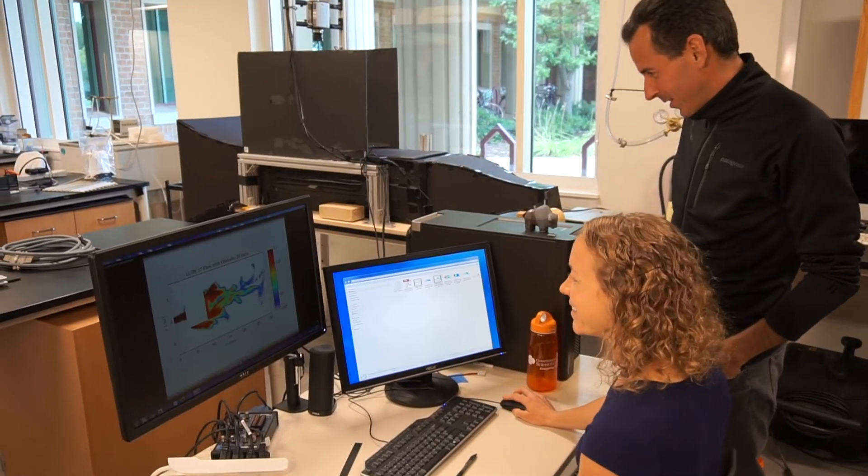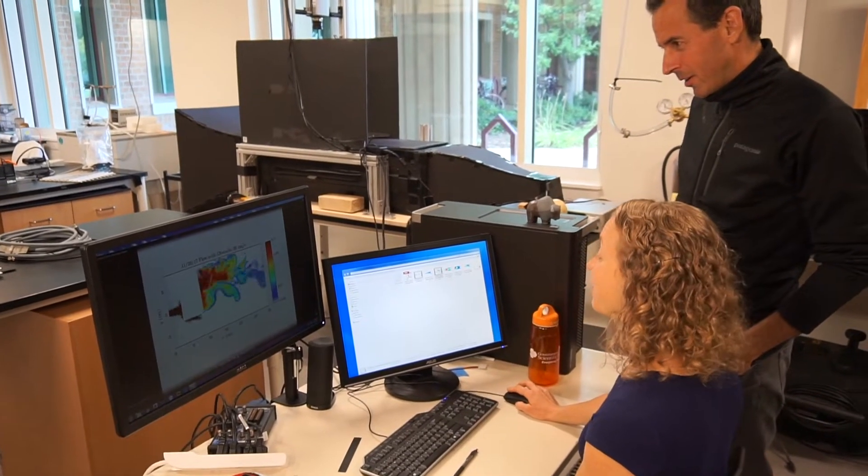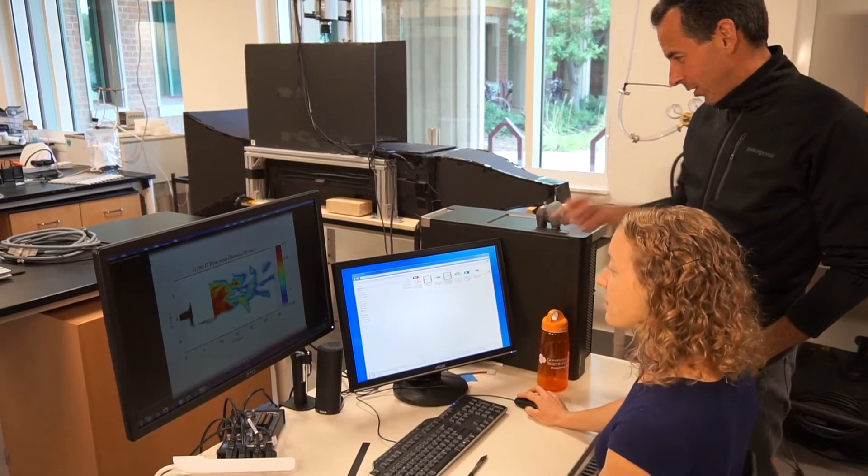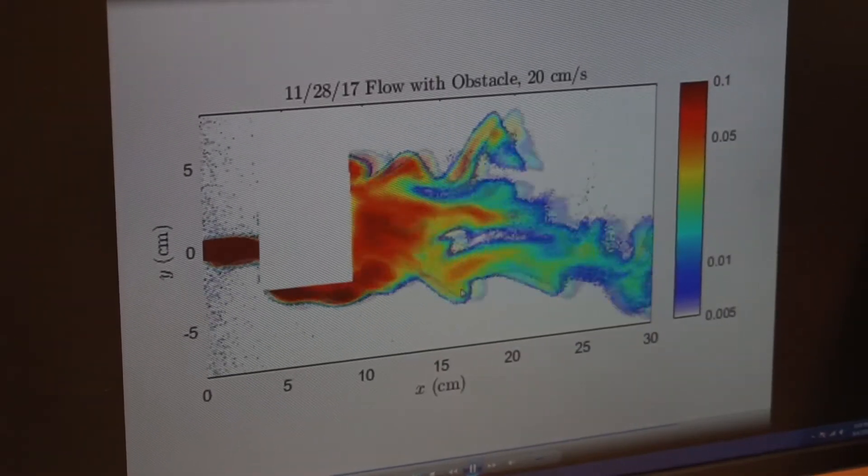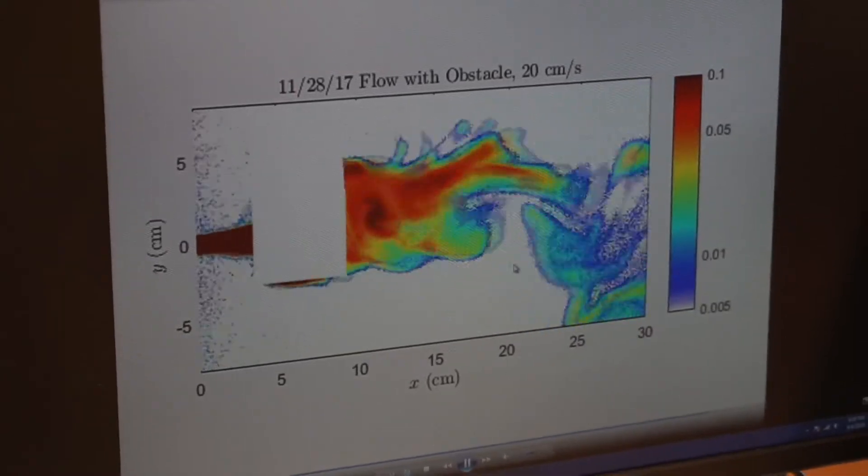Right now I'm the lead PI and CU is the lead institution on a very large grant from NSF which is trying to understand how animals navigate through odor plumes. What we're doing in our lab here is we're creating digital landscapes of what odor plumes look like, and then that data is being used by other groups which are mostly med schools, neuroscientists, and computational neuroscientists.